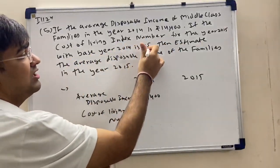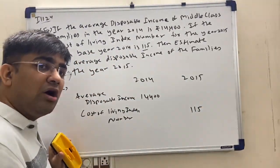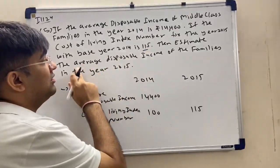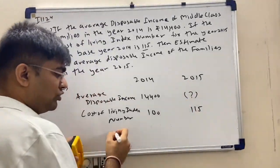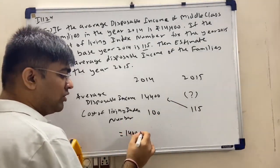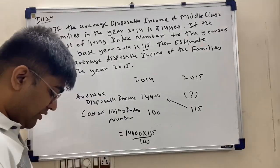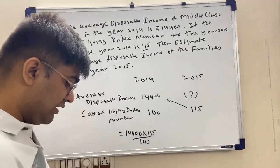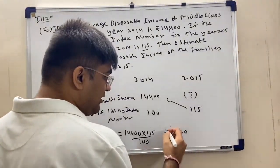By cross multiplication: 14,400 into 115 upon 100 equals 16,560. So the average disposable income for 2015 is Rs. 16,560. The cost of living index number rose from 100 to 115, and correspondingly the income rose from 14,400 to 16,560.